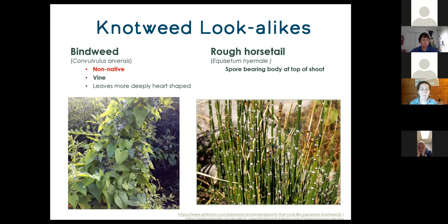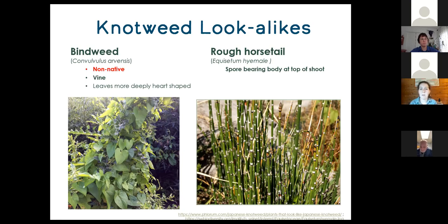Some lookalikes for knotweed: first is bindweed, a non-native vine. Its leaves can look somewhat similar — heart-shaped — but the leaf attachment tends to be more deeply heart-shaped than knotweed's, and it lacks the bamboo-like shoot. The second species is rough horsetail or equisetum. Some people confuse equisetum with very young knotweeds because of that bamboo-like look. To tell the difference quickly, look for the spore-bearing body at the top of the shoot — they kind of look like rattlesnake tails.